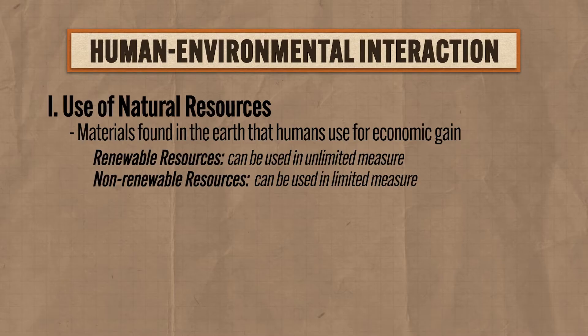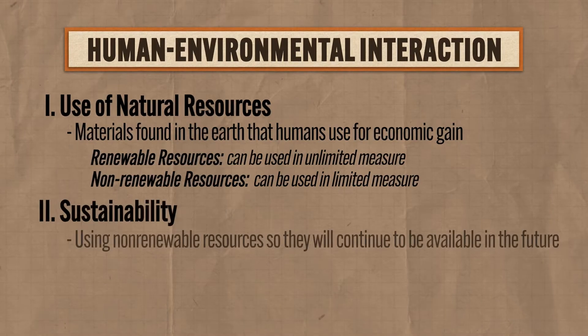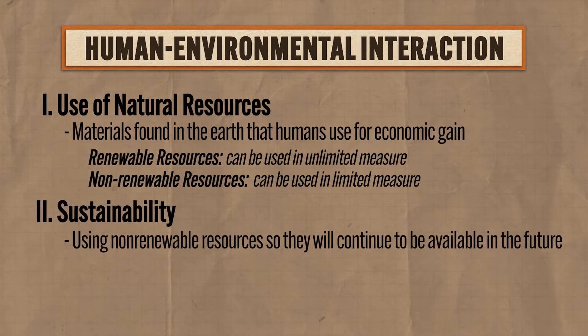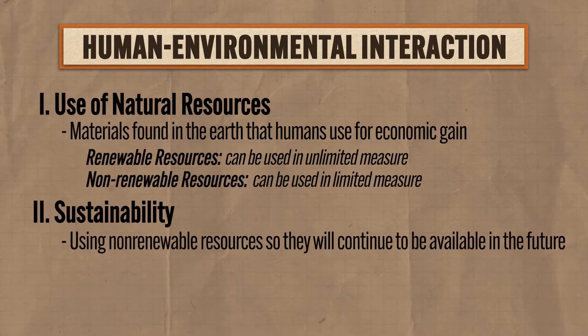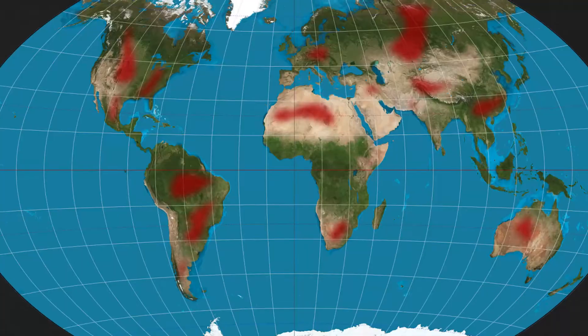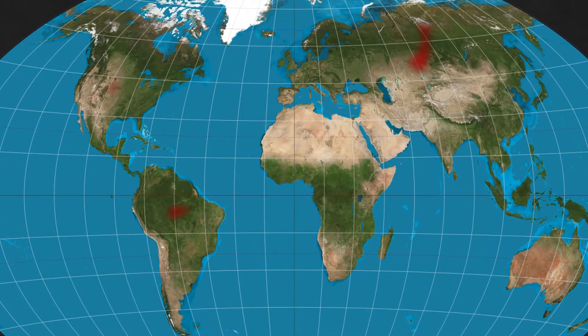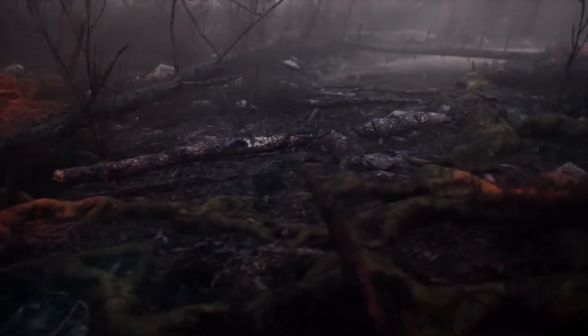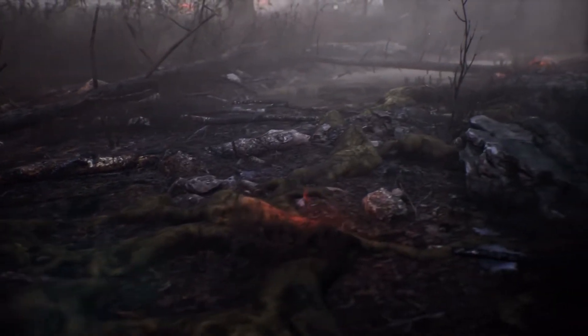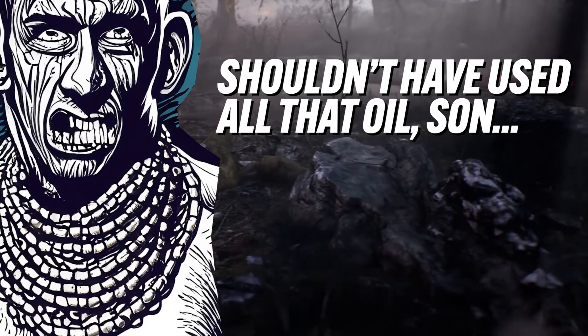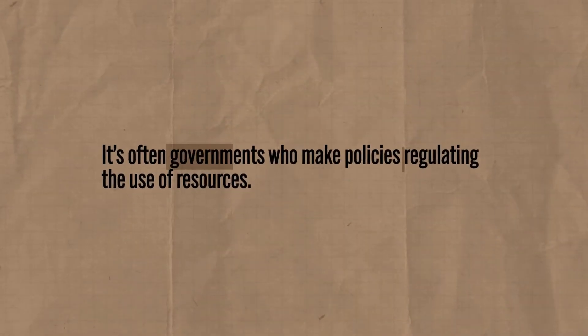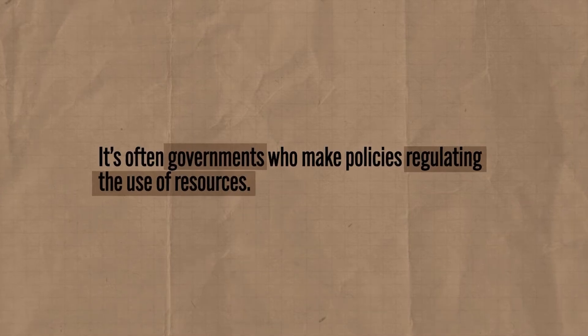The second major category of human-environmental interaction is concerned with sustainability, which is about using renewable resources in a way that they will continue to be available in the future. We could use up all the non-renewable resources in our generation and create post-apocalyptic conditions for our children, but that's generally frowned upon. We want to make sure that resources will continue to be available in the future, and to accomplish this, it's often governments who make policies regulating the use of those resources.